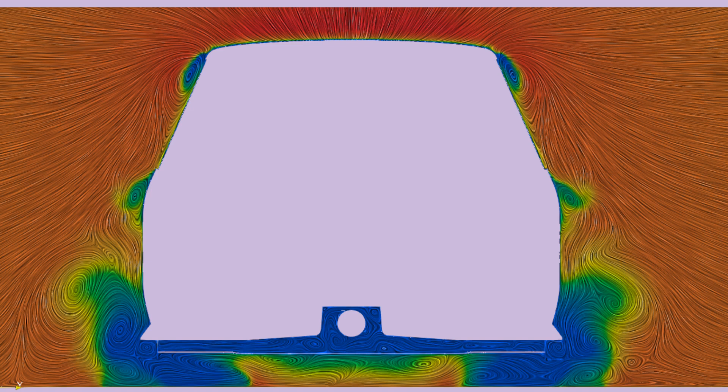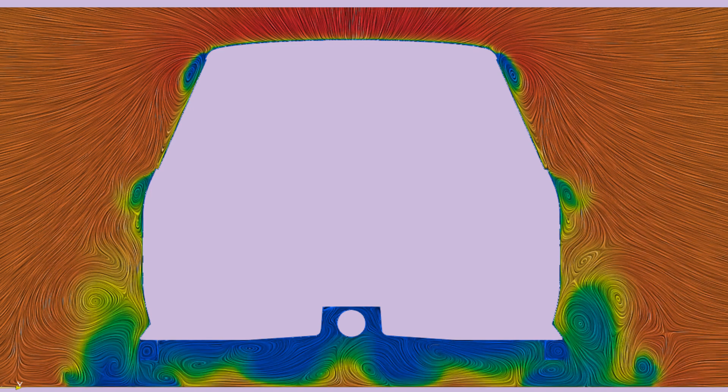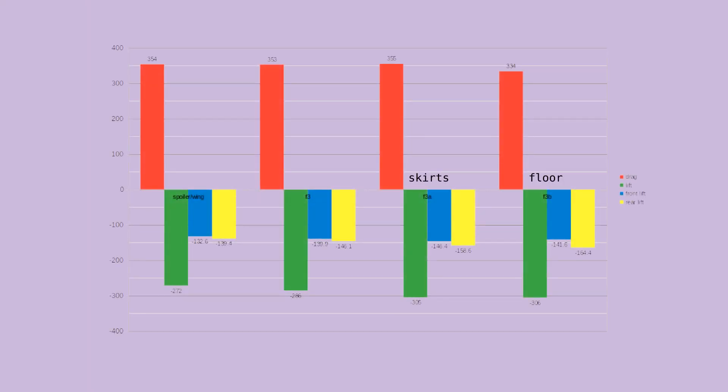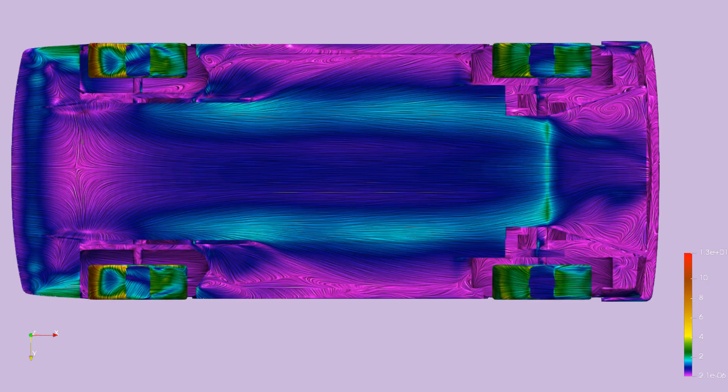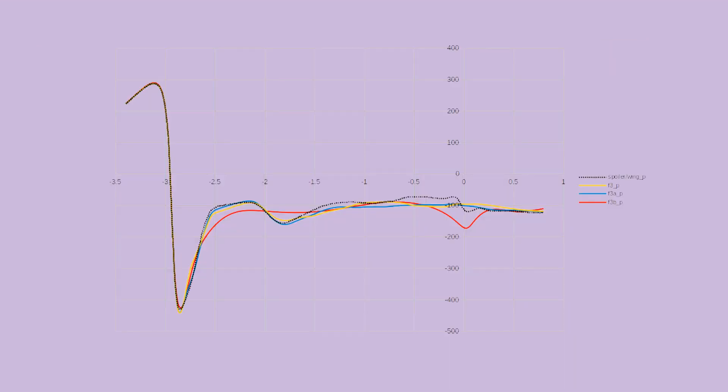Before I get to the mechanism behind the improvements to the performance of the floor, because things get rather more complicated than I anticipated, I'll address the other models and results. Along with the skirts, a flat floor with a diffuser after the rear axle was run. This just made the downforce more efficient by removing 5% of the drag. A better diffuser likely would improve the downforce, but it's an interesting result that the exact downforce number was produced.